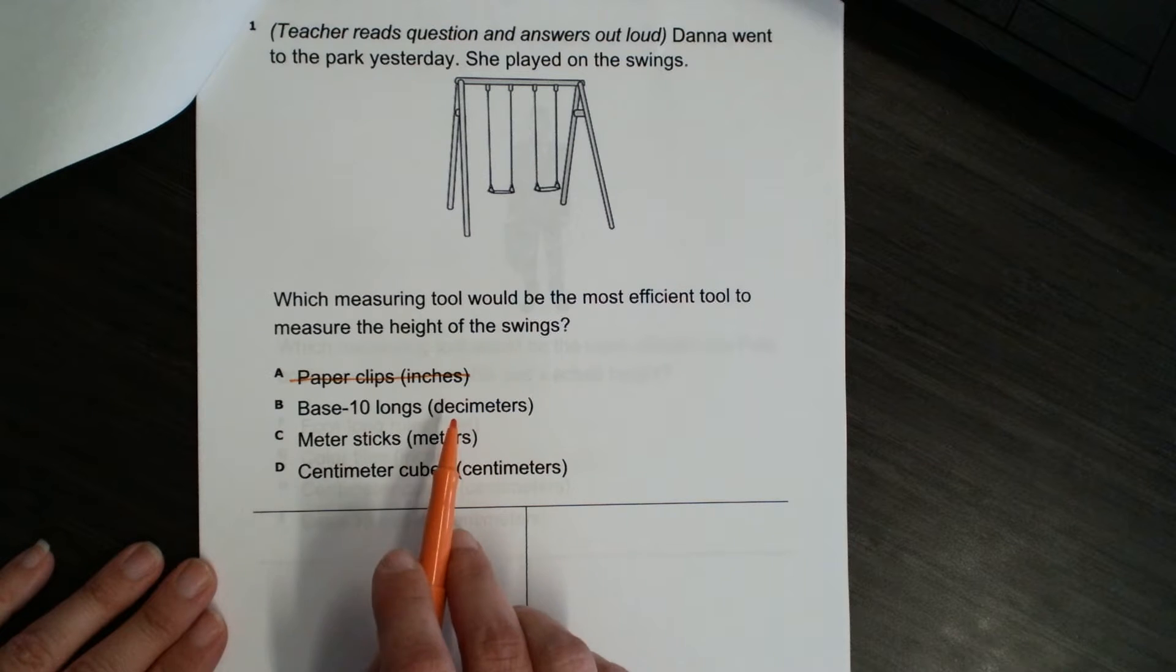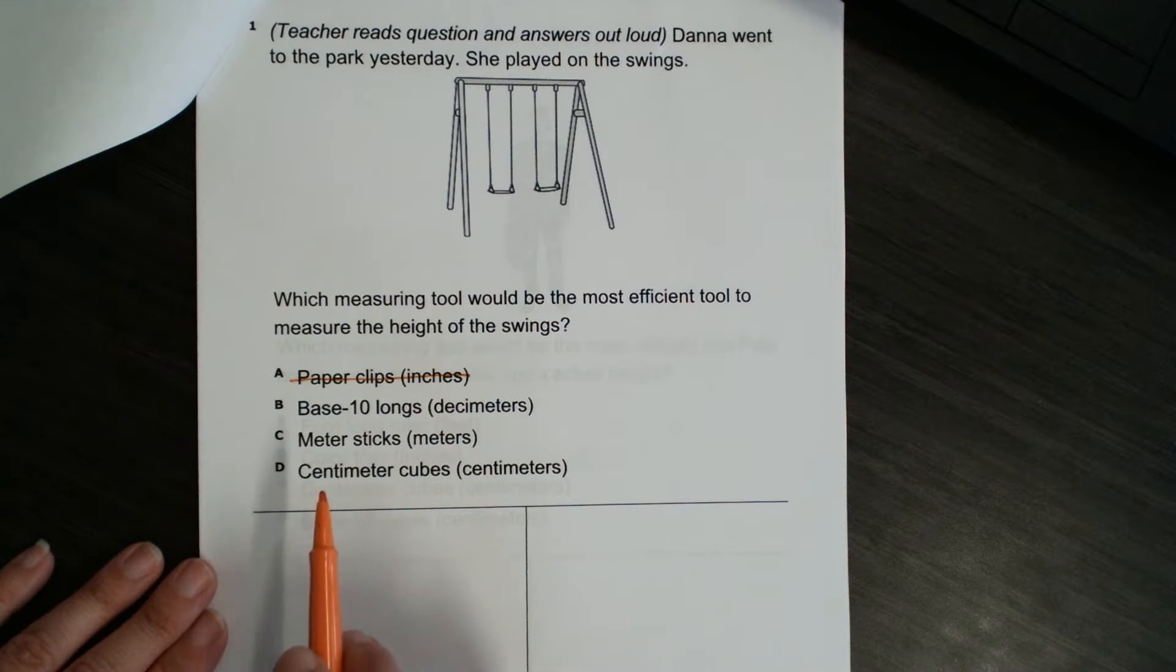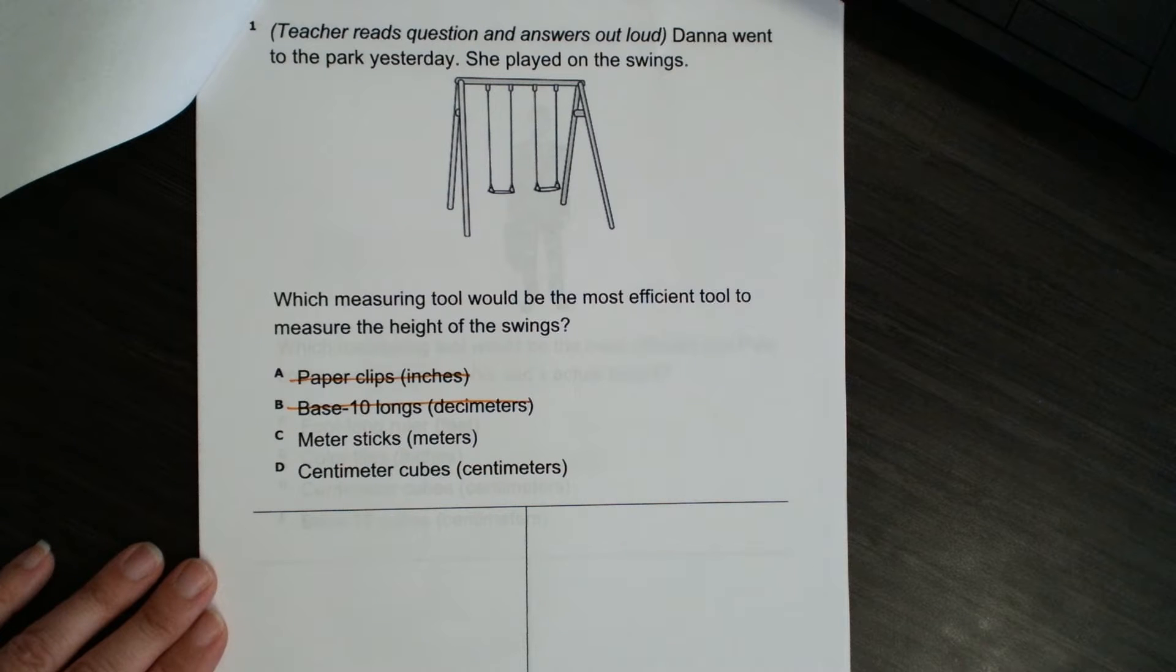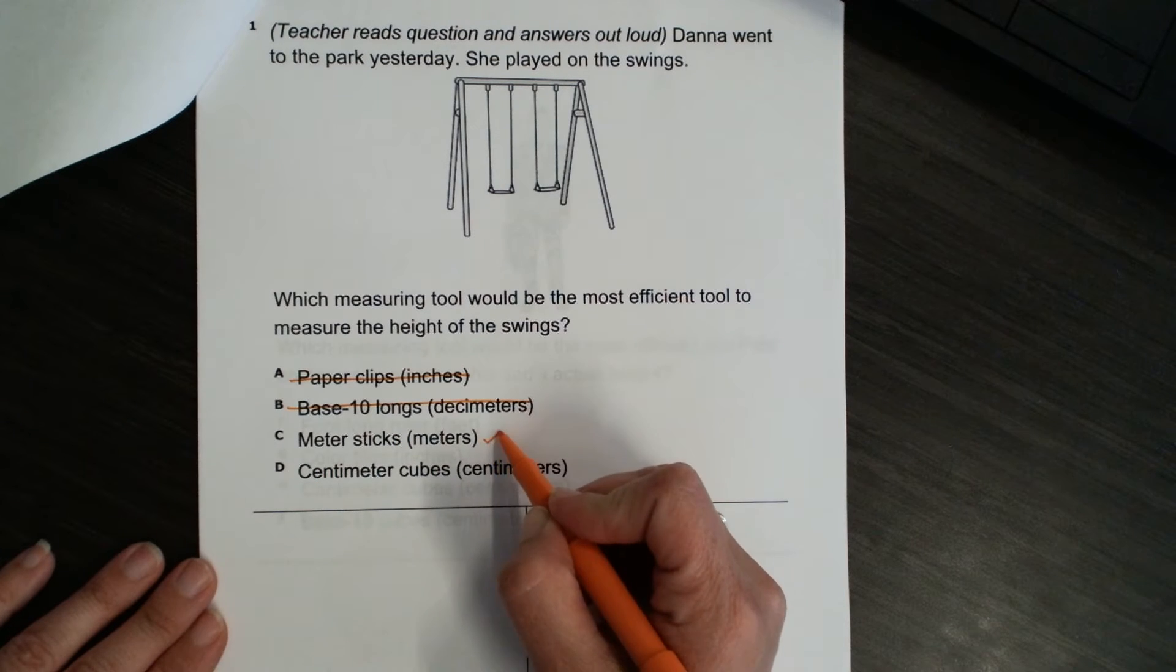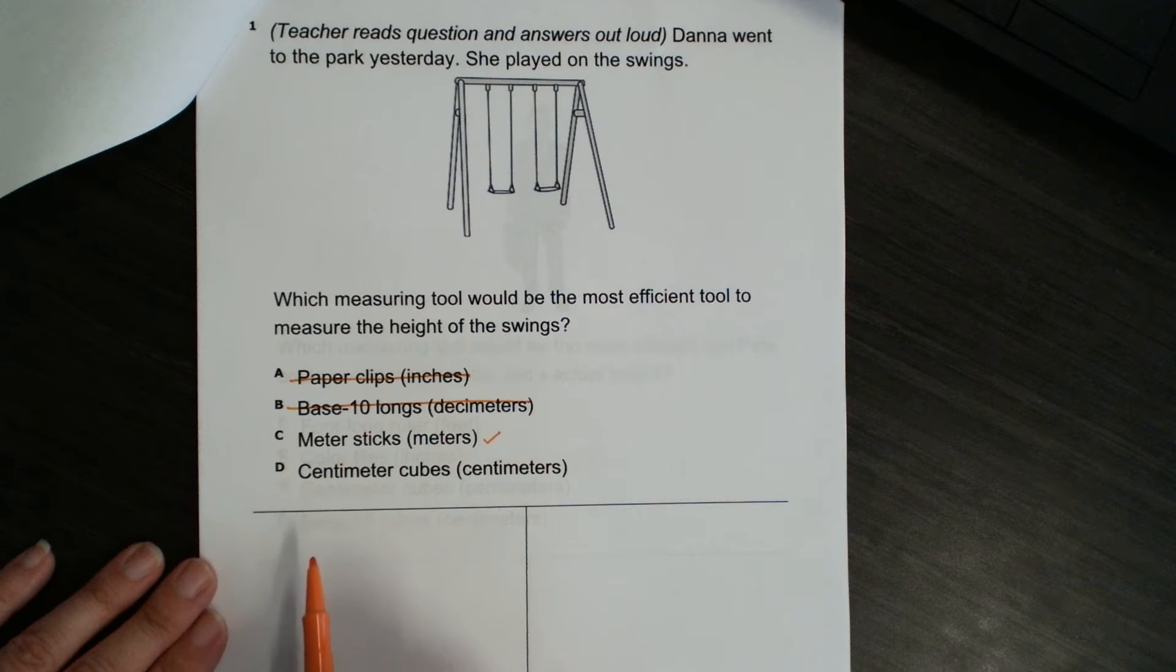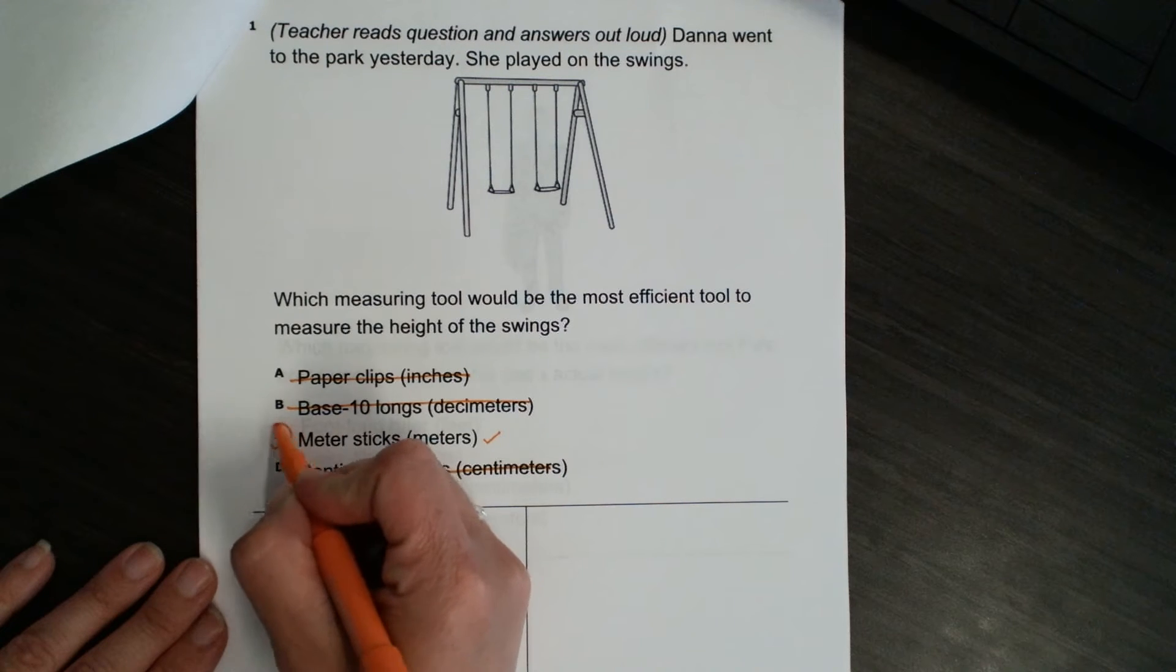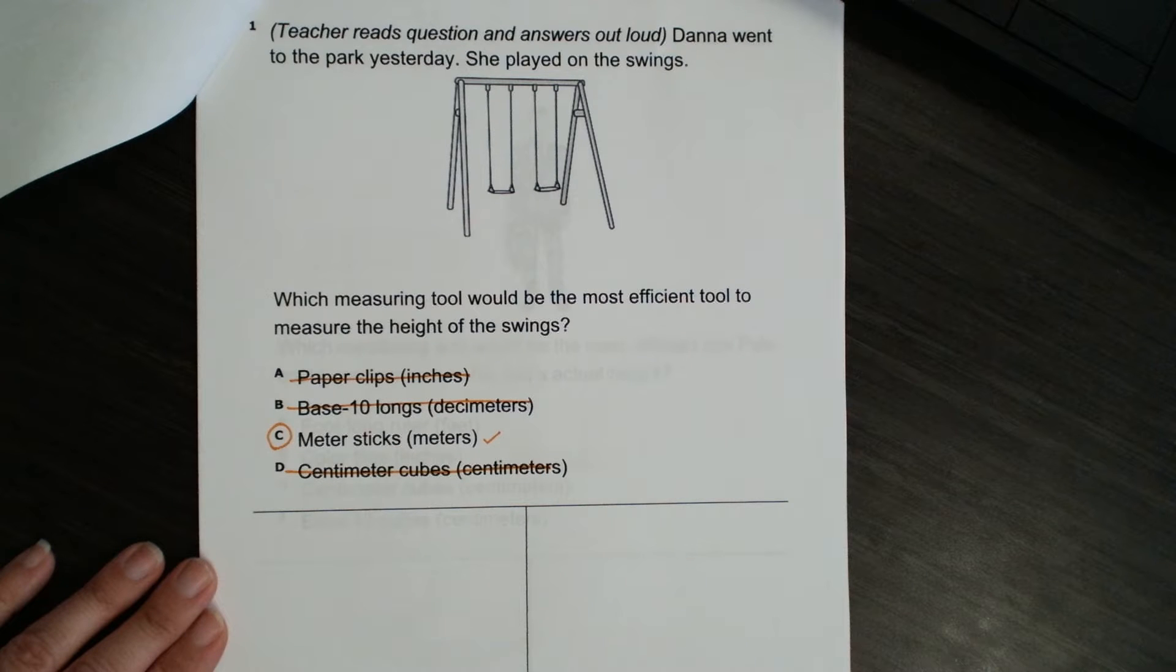Base 10 longs? Decimeters? A decimeter is 10 centimeters. So, I still think no, that would take a lot of those to get to the top of the swing set. What about a meter stick? This one I think so, maybe so. Let's check the last one. Centimeter cubes. Centimeters. Nope, it would take too many little tiny centimeters to get to the top of the swing set. So, our answer here is a meter stick.